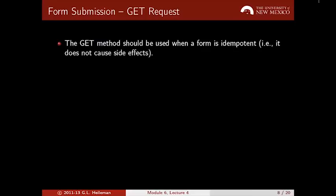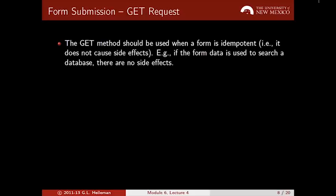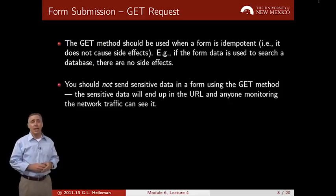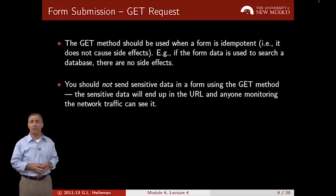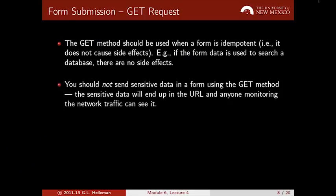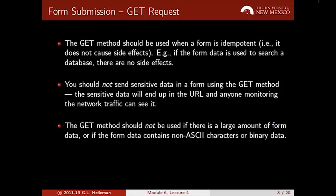The GET method should be used when a form is idempotent — in other words, if the form is not going to create side effects on the server. If the form is used to search a database, for example, it's not producing side effects, so GET is appropriate. You should not send sensitive data using GET, because it's visible right in the address field in the browser and anyone can see it if they're monitoring network traffic.